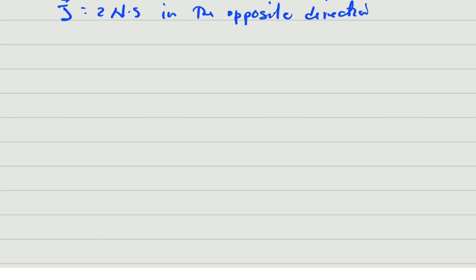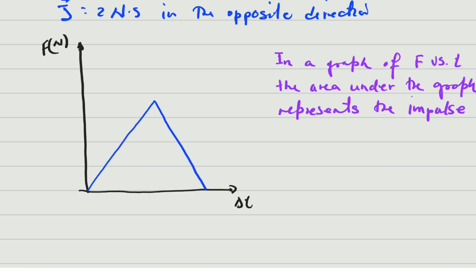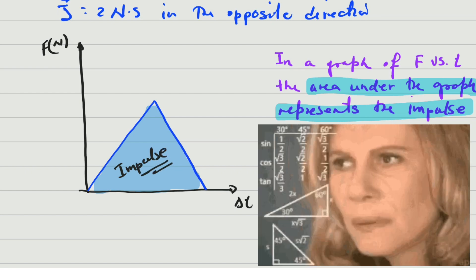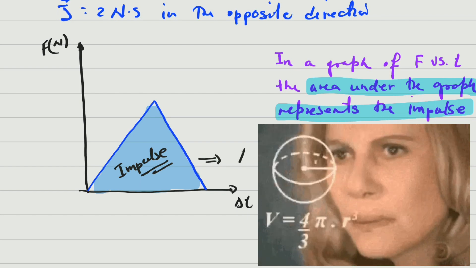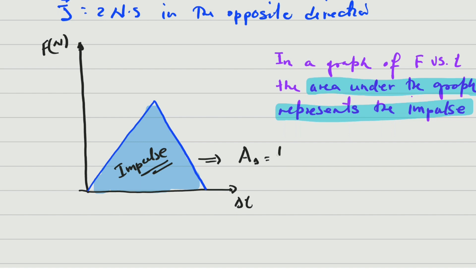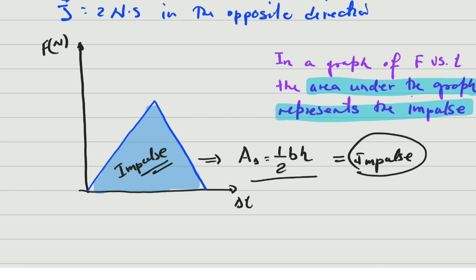In this next part of the lesson we're going to look at graphs — specifically a graph of force versus time. What you need to know is that if you have a graph of force versus time, the area under the graph represents the impulse. For instance, if the area under the graph is a triangle, you calculate half times base times height, and that value equals the impulse.